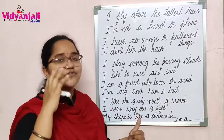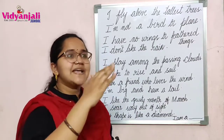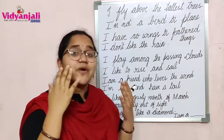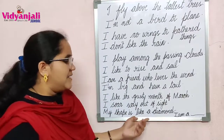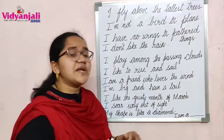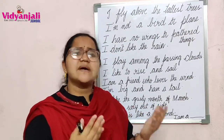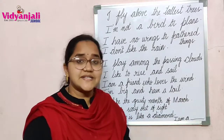I soar way out of sight — it flies and flies, going on and on until we cannot see it. Its shape is like a diamond. Some are like diamonds, some are like birds.